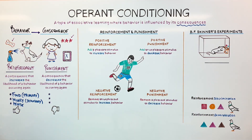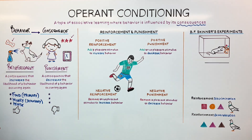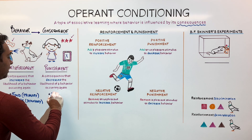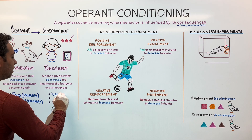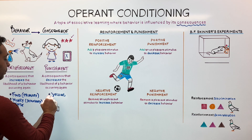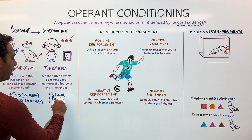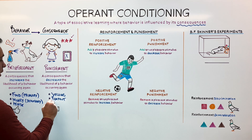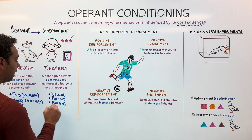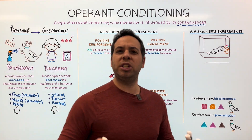What about punishers — things that we want to decrease the likelihood of a behavior occurring? Well, it could be things like scolding, yelling — 'please don't do that, this is going to hurt somebody.' Putting somebody in timeout would be a pretty good punisher. Or even things like ignoring — ignoring somebody might make a behavior less likely to occur again. So that's the fundamental principle of operant conditioning: we have reinforcement and we have punishment.